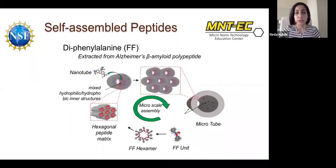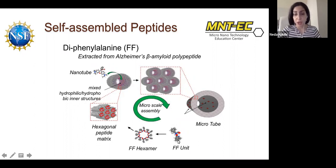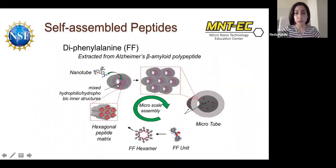One of the natural molecules with self-assembling properties is peptides and proteins. One such peptide is called D-phenylalanine. This D-peptide is made of two phenylalanine groups and has two aromatic hydrophobic groups. When six of these FF units come together, they make a hexamer. Once these hexamers are stacked together, they make narrow channels, and these narrow channels come together to make a nanotube. Once these tubes assemble, they can make microtubes.